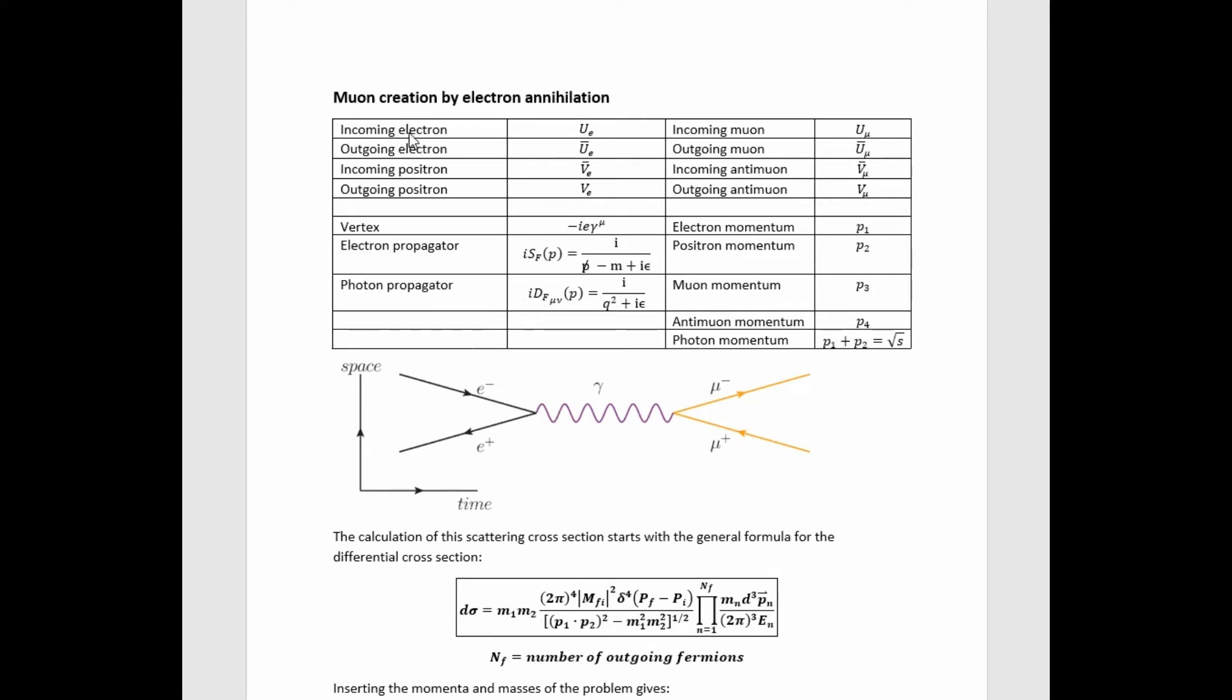We have the labels in the left column, and then the Feynman rules corresponding to those labels in the right column. I've also labeled the momenta of the various particles involved.